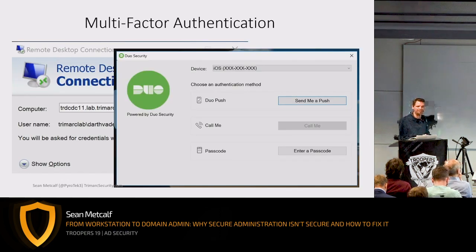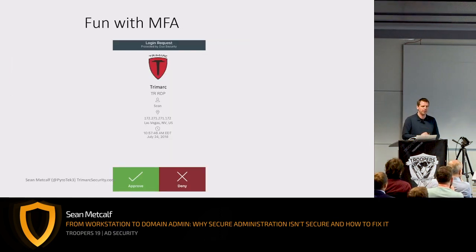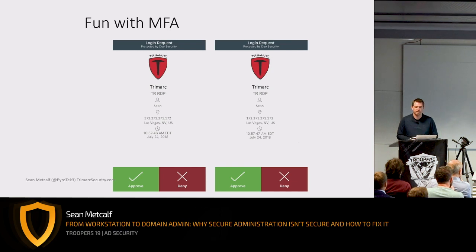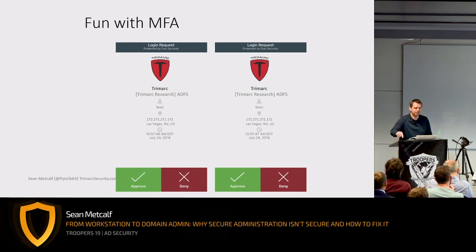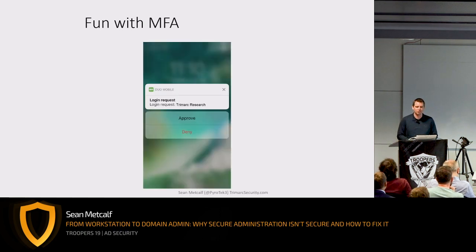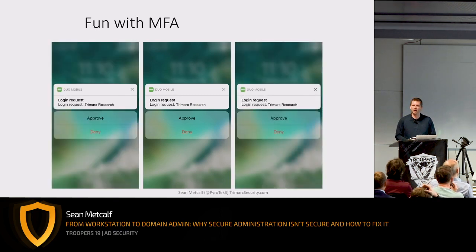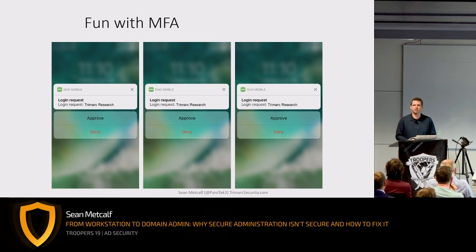With MFA on RDP, you connect to the RDP server and all of a sudden you have two back-to-back MFA requests. I've already hit accept on the first one — what's the second one from? Maybe you're connecting through ADFS and you get the same thing. You're not really thinking because you're tired, haven't had coffee yet, it's 8am. Or maybe you haven't unlocked your phone yet and you just get a prompt a few times — is this a hiccup, or someone trying to get an MFA collision?